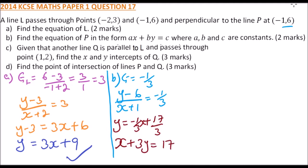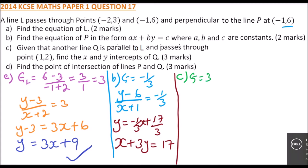That is part b. For part c, we are told that another line q is parallel to l. Since it is parallel, the gradient is the same, so gradient of q equals 3. We can get the equation using the given point 1, 2.